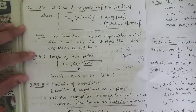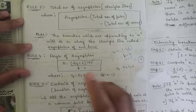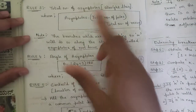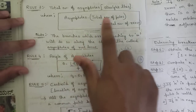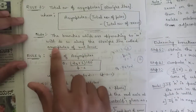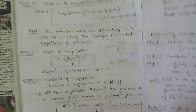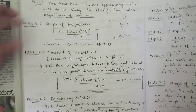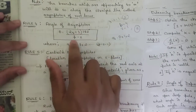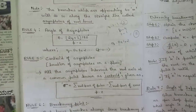Rule three is to find the total number of asymptotes — straight lines along which branches approach infinity. The total number of asymptotes is given by the formula: total poles minus total zeros. The branches approaching infinity do so along these straight lines called asymptotes. The next rule is to find the angle of asymptotes, given by the formula: theta = (2q + 1) × 180° / (P − Z), where q ranges from 0 to P − Z − 1.